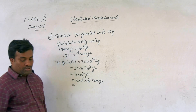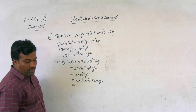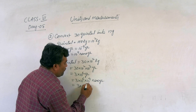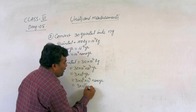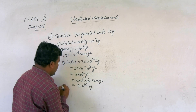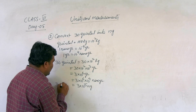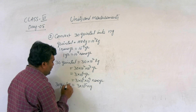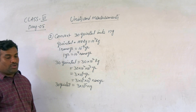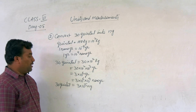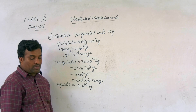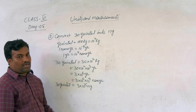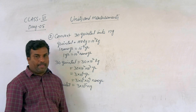That simplifies to 3 into 10 to the power of 15 nanograms. So 30 quintal equals 3 into 10 to the power of 15 nanograms. Clear everyone? This is the answer.